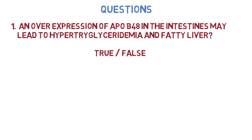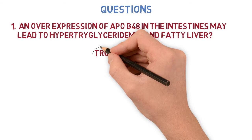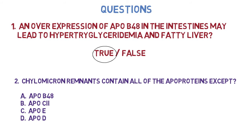Question number one: An overexpression of ApoB48 in the intestines may lead to hypertriglyceridemia and fatty liver — true or false? This is true. Question number two: Chylomicron remnants contain all of the apoproteins except: A) ApoB48, B) ApoC2, C) ApoE, or D) ApoD?